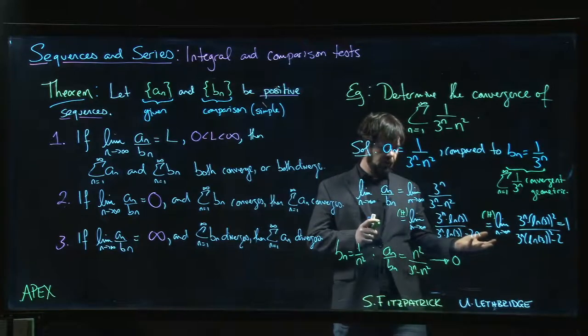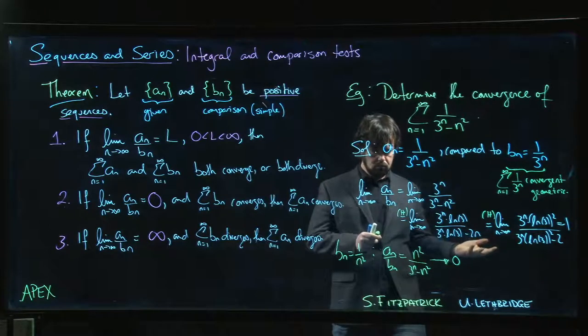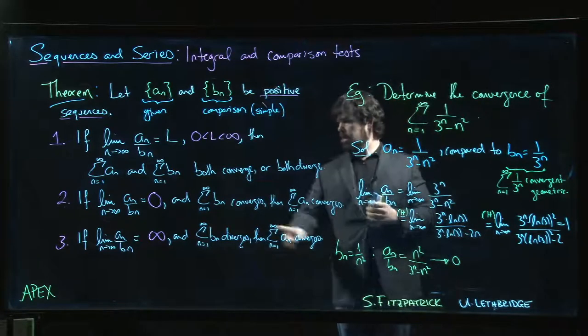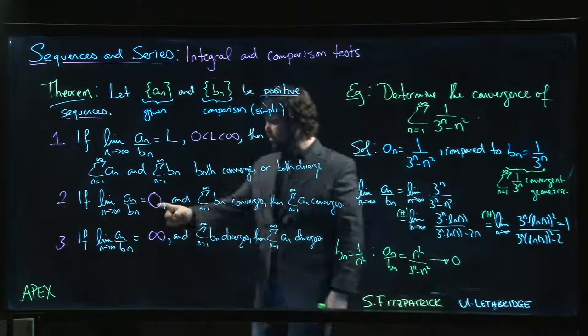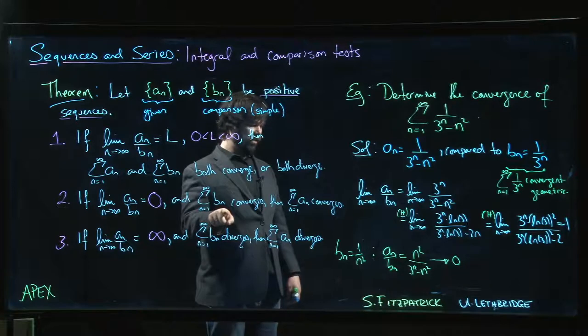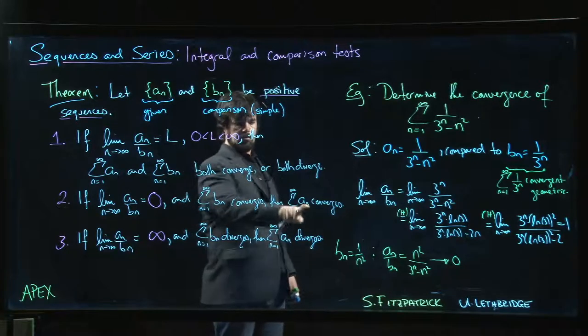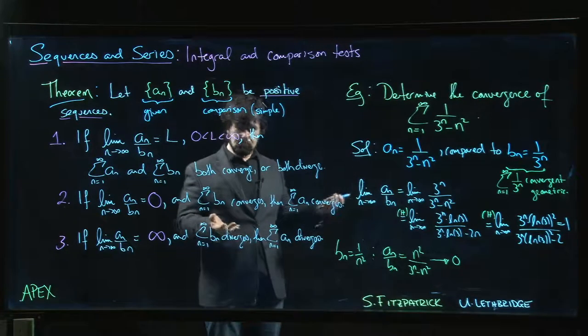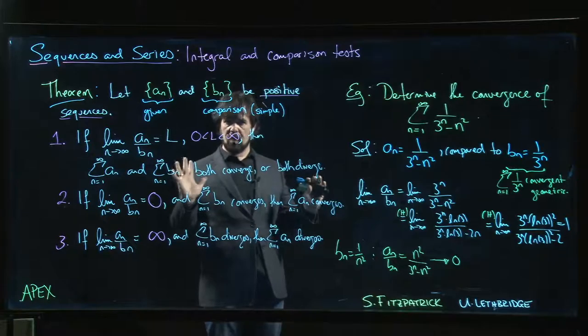So did limit comparison fail? Not exactly. This puts us in case 2: limit is 0. The b_n series converges - it's a convergent p-series - so we know the a_n series converges as well. Either way it works.